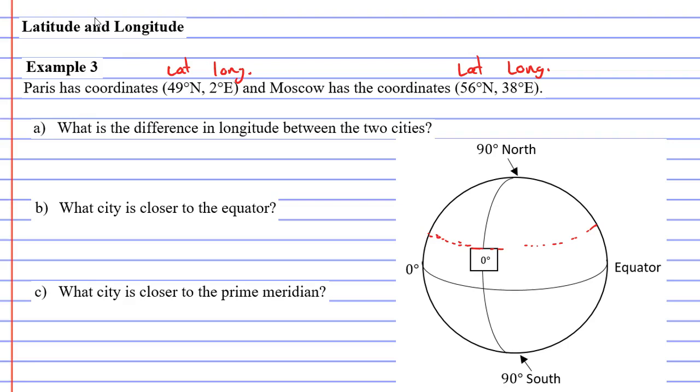And the other coordinate it gives is 2 degrees east, which means our longitude, we're going 2 degrees to the right of 0 degrees. So it's very close to the prime meridian. Paris is not very far from Greenwich, only 2 degrees east. Okay, so that is Paris in red.